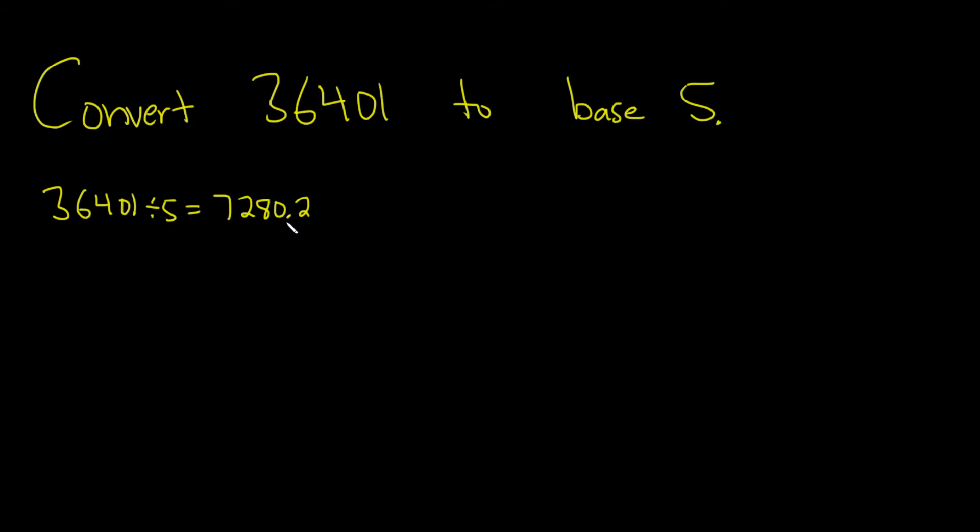So to find the remainder, what you do is you take the 0.2 and you multiply it by 5. So 0.2 times 5 is 1. So your remainder is 1. I'm going to put that in the box.